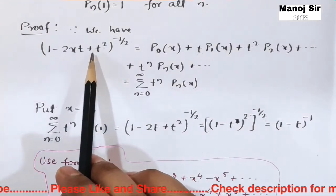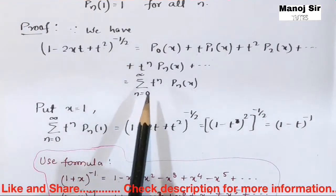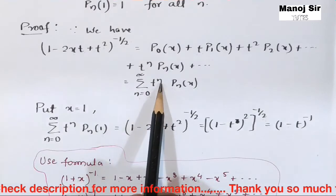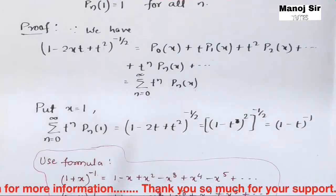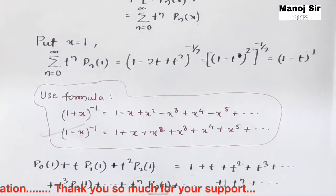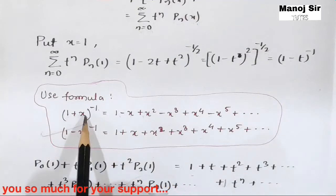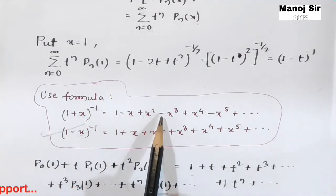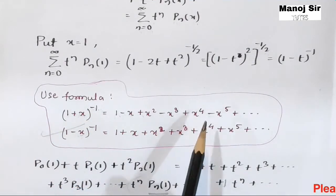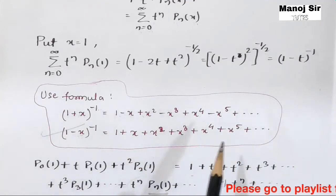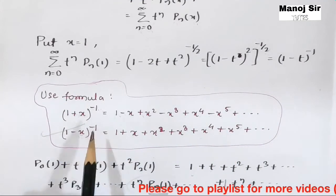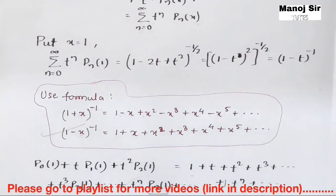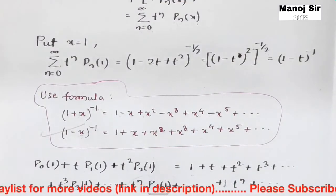In this way we can prove that P_n(1) = 1. You need to know two things: first, the generating function (1 - 2xT + T²)^(-1/2) = summation T^n·P_n(x); and second, the two formulae: (1+x)^(-1) = 1 - x + x² - ... and (1-x)^(-1) = 1 + x + x² + x³ + ...